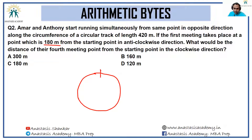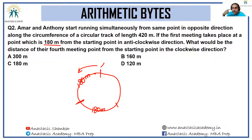Let's say this was the circular track they were running on. The first meeting takes place at 180 meters in the anti-clockwise direction. If the first meeting has taken place when the runner running in the anti-clockwise direction and the runner running in the clockwise direction have met at this point — if they start from the same point, they meet after 180 meters in the anti-clockwise direction. So for every subsequent meeting, 180 meters will be traveled in the anti-clockwise direction.